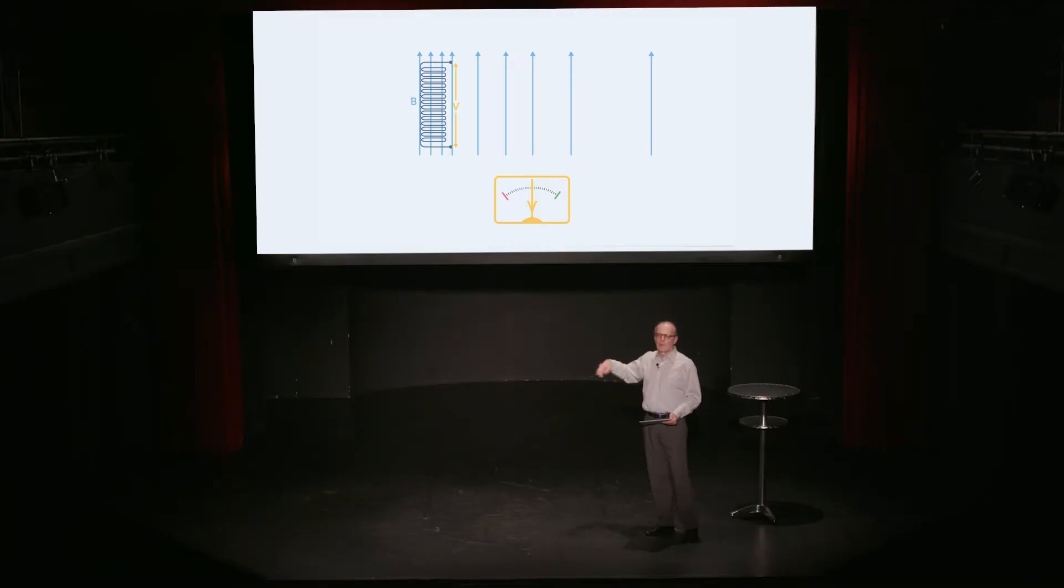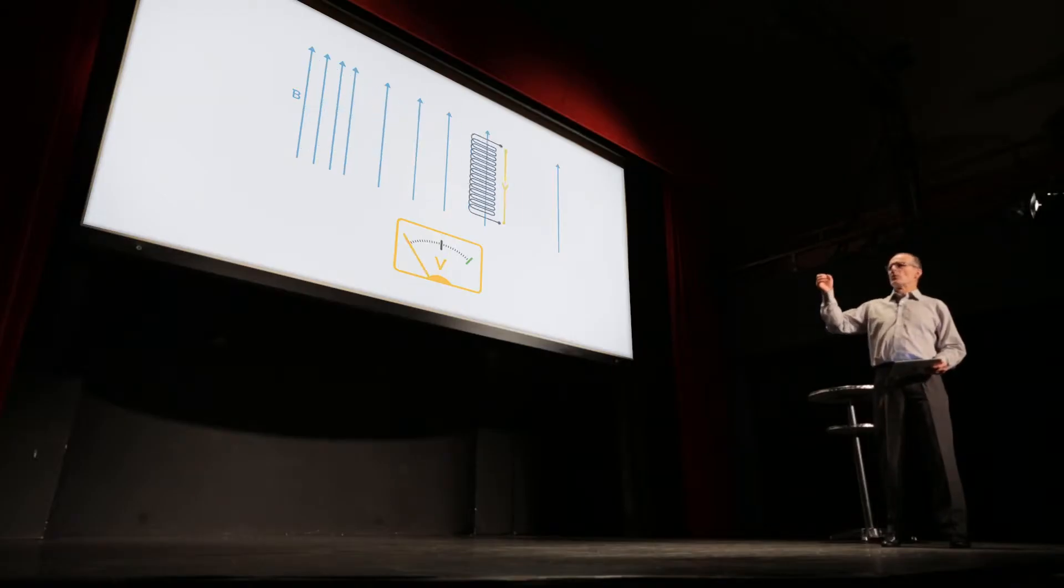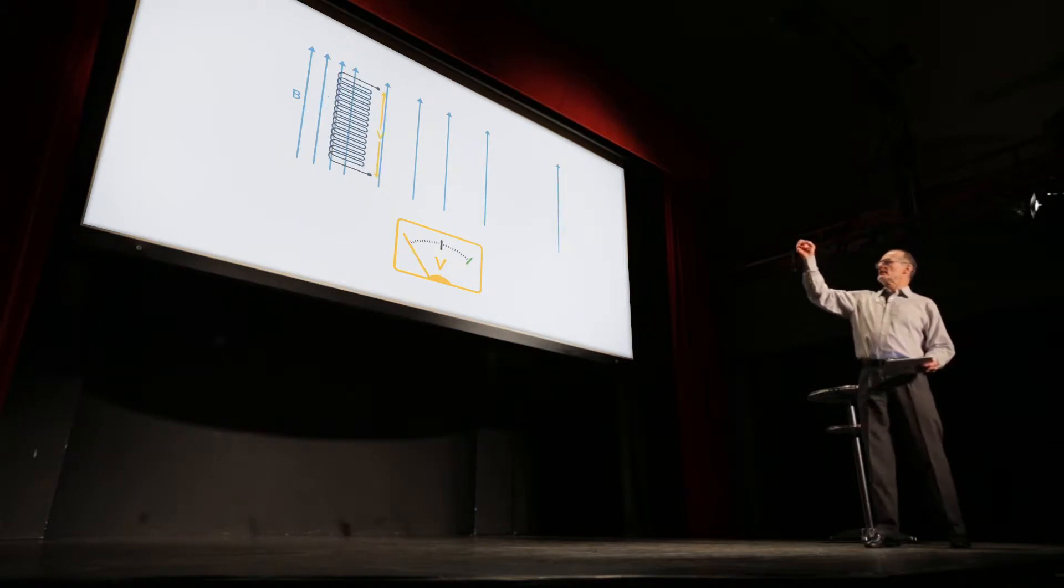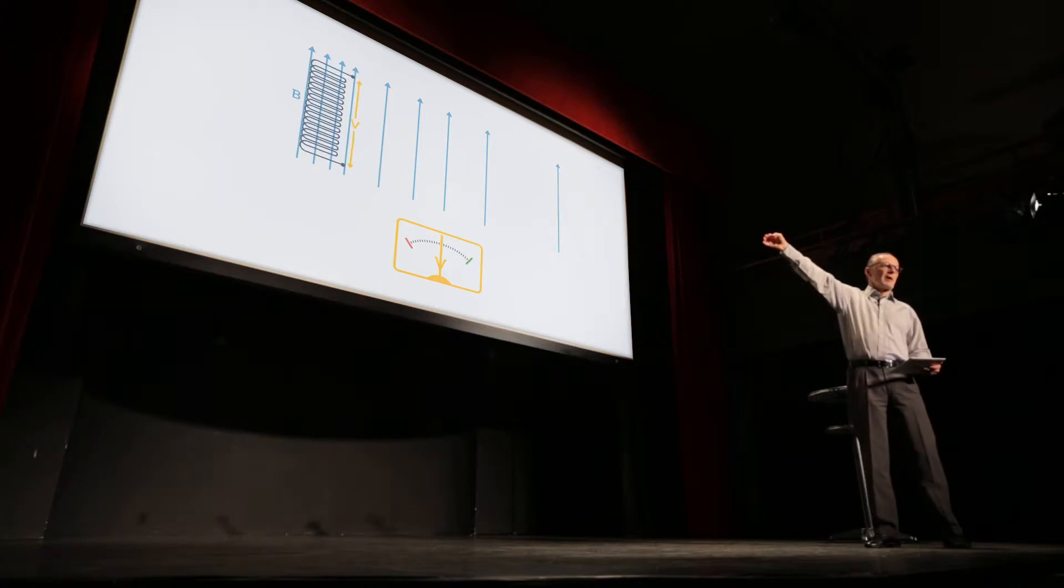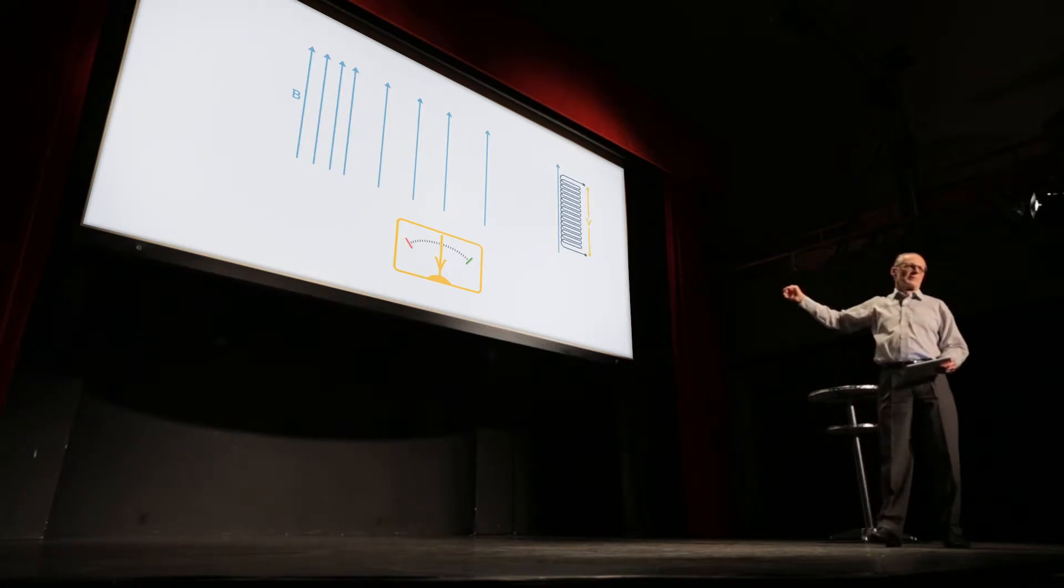The last step is then to divide that integral by the area of the coil to convert the total flux change into a flux density change.